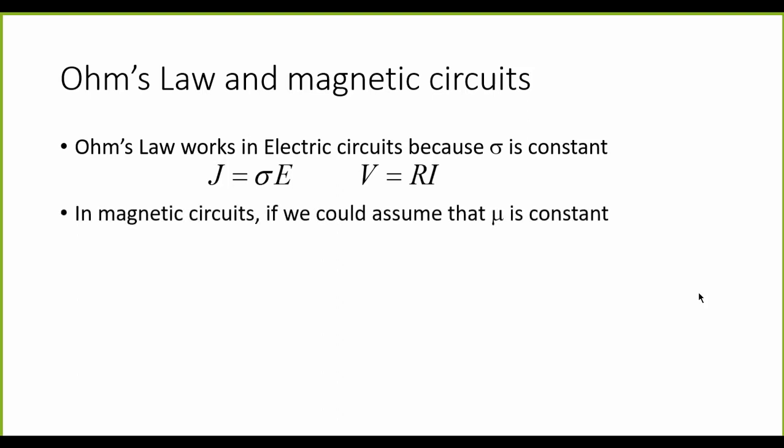In the magnetic circuit, if we could only assume that the permeability mu is constant—and you know that is a gross approximation—we can take this expression that the flux density is proportional to the magnetic field.